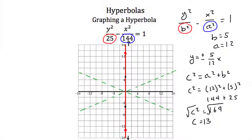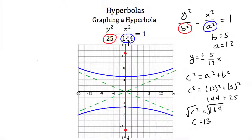Now we can sketch the graph. The graph of y squared over 25 minus x squared over 144 equals 1 looks something like that. So that completes the tutorial on hyperbolas as conic sections.